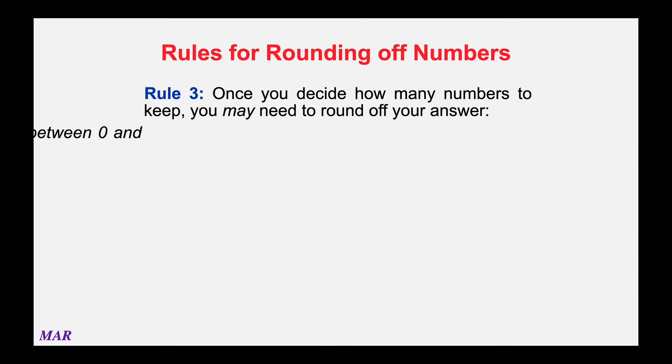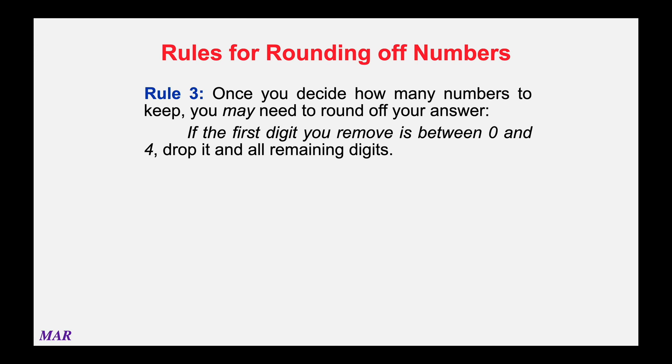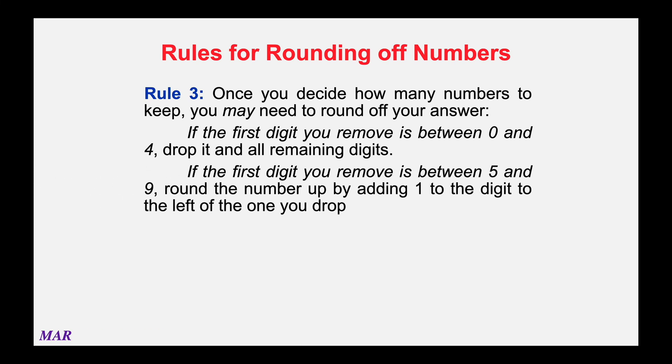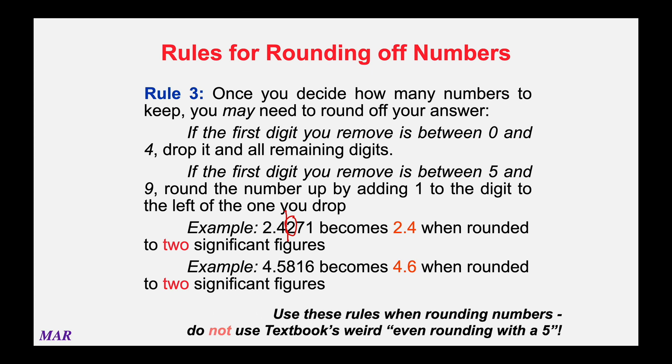Rounding up, which I already mentioned earlier, is something you may have to do. If the first digit that you're going to remove is between 0 and 4, you just drop it and leave the number alone. But if the first digit you drop is between 5 and 9, round it up. So 2.4271 would become 2.4 when you round it to two sig figs because the first digit you drop is the 2. 2 is between 0 and 4, so you just leave the 2.4 alone. On the other hand, 4.5816 becomes 4.6 if you're going to round it. You're going to cut it off after the 5. The first digit that you drop is an 8. That's between 5 and 9. So 4.5 becomes 4.6. The textbook says something about even rounding with a 5. Just ignore that. That's just silly. You just want to use the simple way, 0 to 4, leave it alone, 5 to 9, round up. Pretty chill.